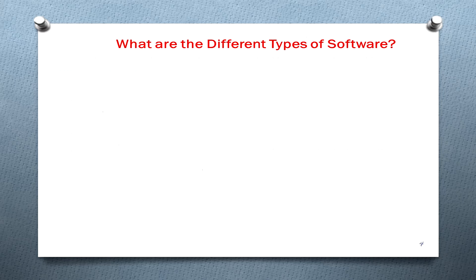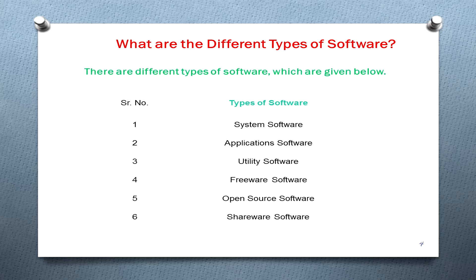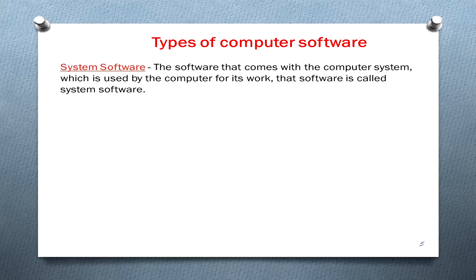There are different types of software: number one, system software; number two, application software; number three, utility software; number four, freeware software; number five, open source software; and number six, shareware software.